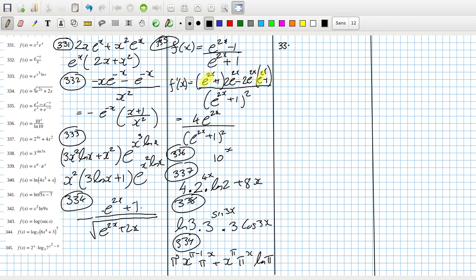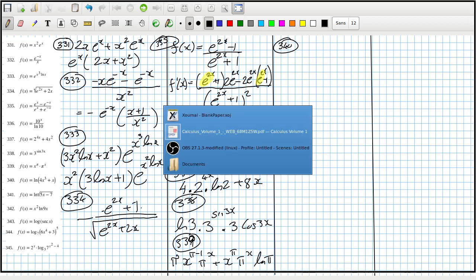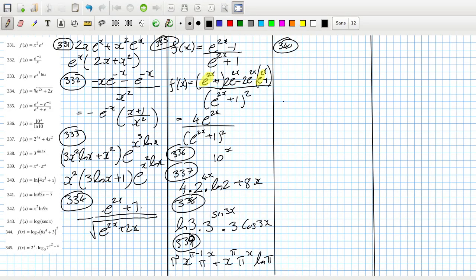340. That would be 12x squared plus 1 over 4x cube plus x. 341, that would be a half times 5 over 5x minus 7. 342, that would be 2x log 9x plus x squared times 1 over x, so just x. Could take the x out: x times 2 log 9x plus 1.